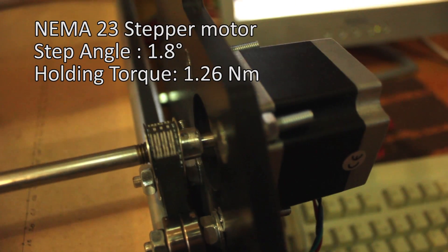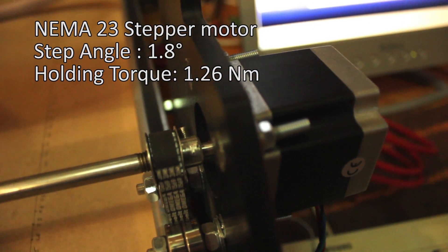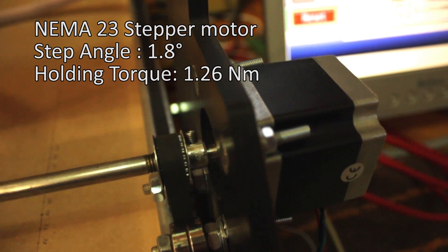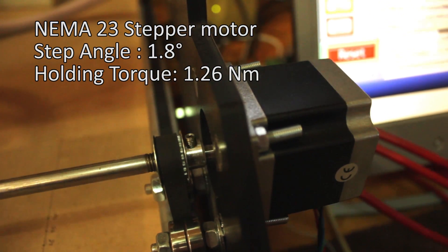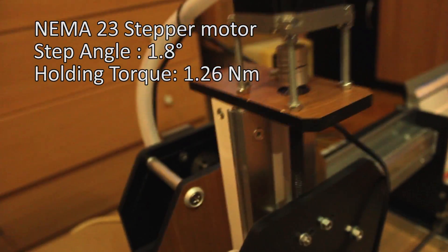The X and Y axis run on wheels and they are driven by belts. Three NEMA 23 stepper motors are used for this project, each having a 1.8 degrees step angle and a 1.26 Nm torque.